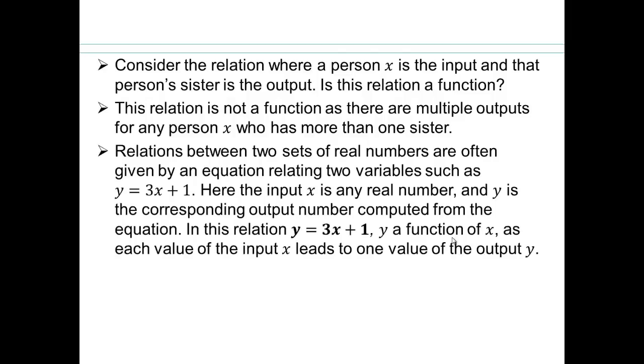Relations between two sets of real numbers are often given by equation relating to variables, like x and y, temperature, and altitude you're at. So there can be many different quantities that are related to each other. When you write it in this form, y equals 3 times x plus 1, x is the input, and y is the output. So each input of a real number x will generate one output. Because you're taking that number, multiplying by a 3, and then adding a 1. So this relationship here is a function.